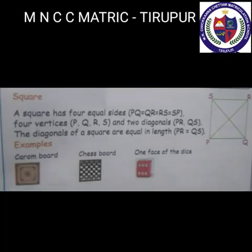First one: Square. A square has four equal sides — PQ = QR = RS = SP — four vertices P, Q, R, S, and two diagonals PR and QS. The diagonals of a square are equal in length: PR = QS. Examples: carrom board, chess board, one face of a dice.